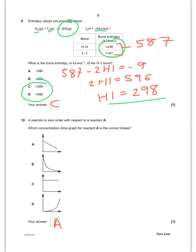Reaction is zero order with respect to A. What is the correct concentration time graph? It's going to be A for that one.